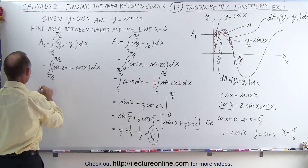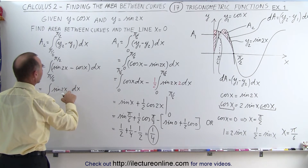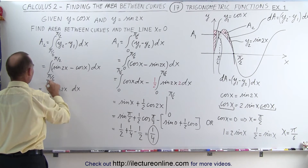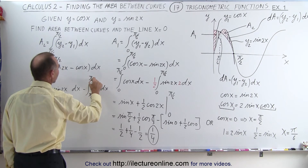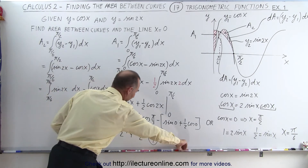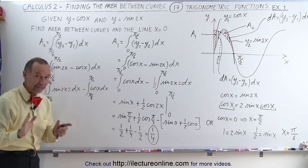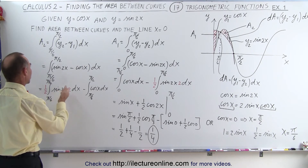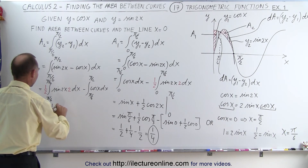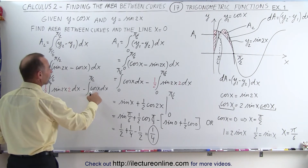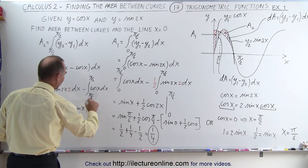We write this as two separate integrals: the integral of sine of 2x dx from pi over 6 to pi over 2, minus the integral of cosine of x dx from pi over 6 to pi over 2. We insert the factor of 2 dx and one half to compensate. Integrating sine of 2x gives negative cosine of 2x times one half, so minus one half cosine of 2x, and the integral of cosine is sine but with a negative in front, giving minus sine of x, all evaluated from pi over 6 to pi over 2.